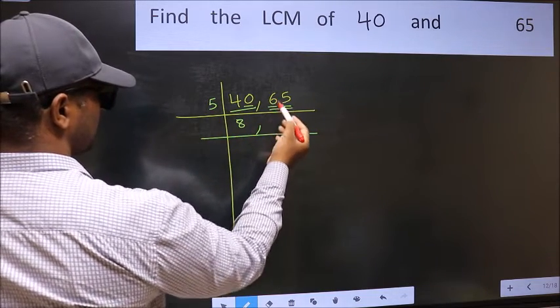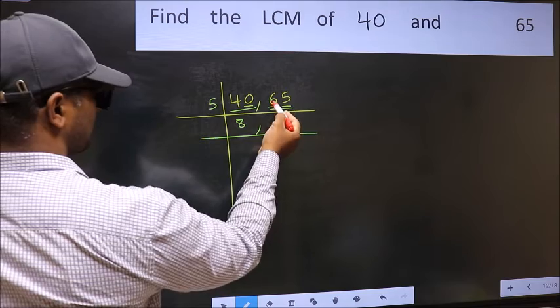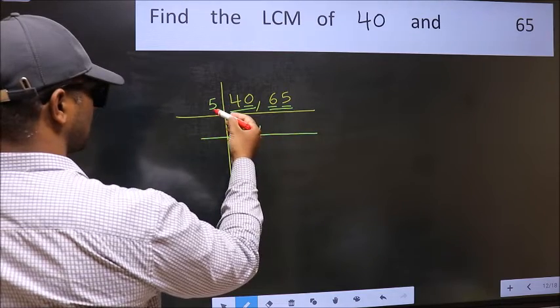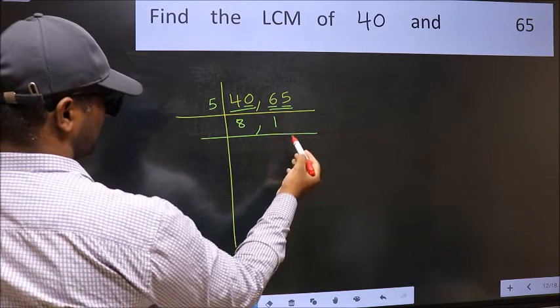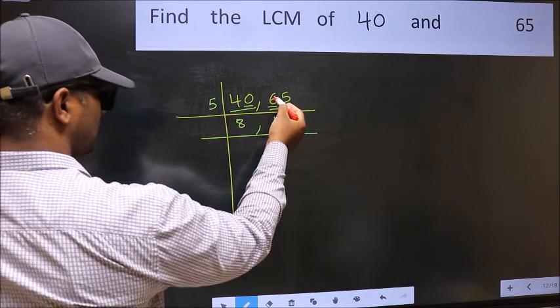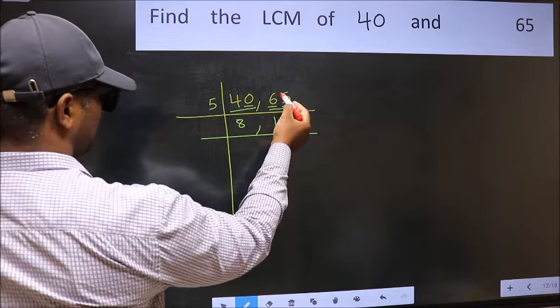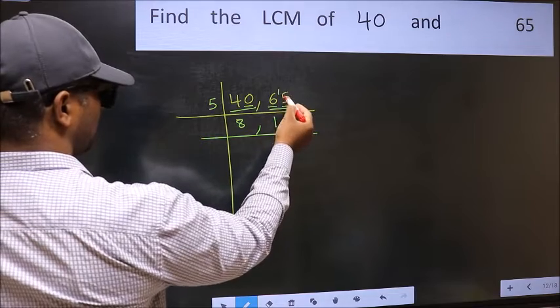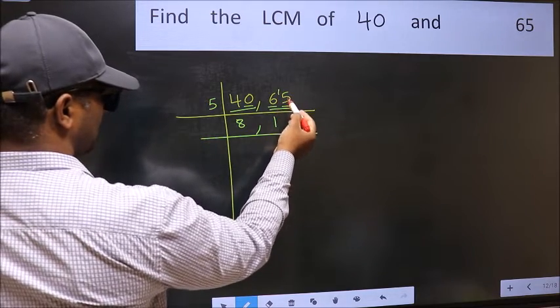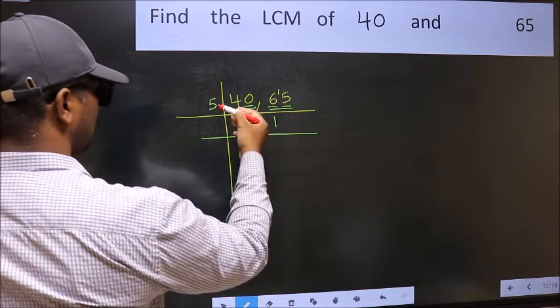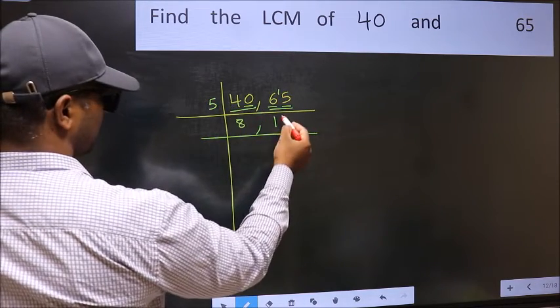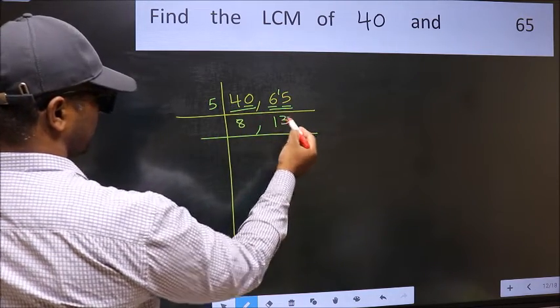For the first digit 6: a number close to 6 in the 5 times table is 5, so 5 times 1 is 5. 6 minus 5 is 1, carry forward to get 15. When do we get 15 in the 5 times table? 5 times 3 is 15.